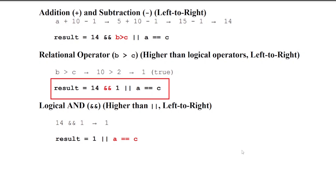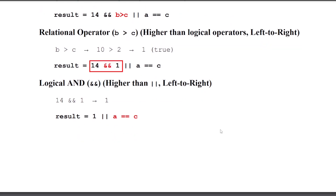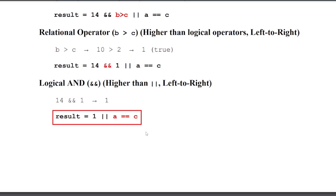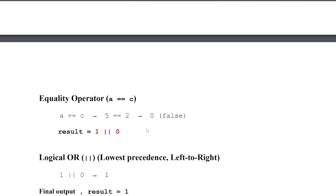Now we evaluate logical AND, which has higher precedence than logical OR. 14 AND 1 — both are non-zero values, so it returns 1. The expression becomes: result = 1 || A == C. The equality operator has higher precedence than logical OR, so we evaluate A == C: 5 == 2, which is false and returns 0.